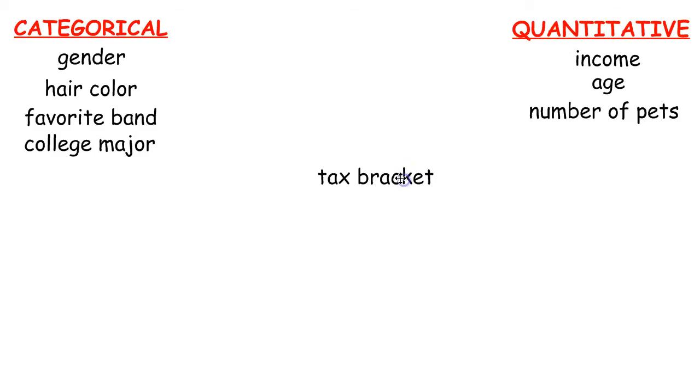Now, it's related to your income, in which case you would think, okay, well the tax bracket is based on how much you make, therefore it's a quantitative variable. However, it's kind of tricky because what we do is we lump people into, based on their income, different categories.